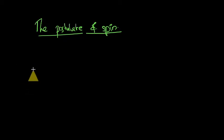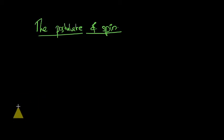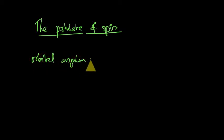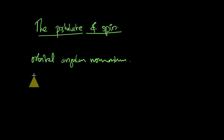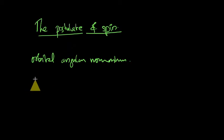You already know that the electron is rotating around the nucleus, and due to the orbital motion of the electron, the electron will have an orbital angular momentum. In addition to this orbital angular momentum, the electron has another angular momentum, and that angular momentum is due to the spin of the electron.